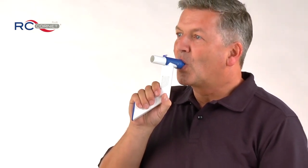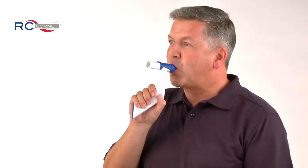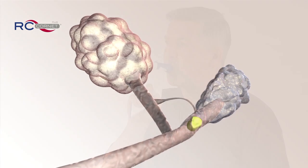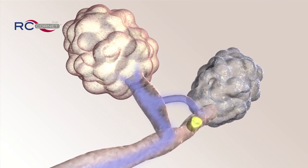When the patient exhales through RC Cornet Plus, a positive exhalation pressure builds up. The lungs automatically perform a pressure compensation, extending from the mouth to the cilia. This widens the airways.